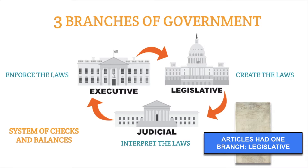Within these three branches, we're also going to have a series of checks and balances. The legislative branch can pass laws and legislation, but in order for that to go into effect, it must be signed by the president. If those laws are deemed to be unconstitutional, the Supreme Court can override those laws and they are no longer valid. So all three branches function together, separately, and all have checks on each other. Three branches of government are created to help the government work much more effectively than it did under the Articles of Confederation.